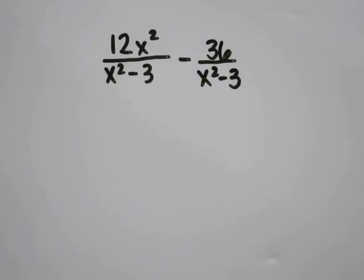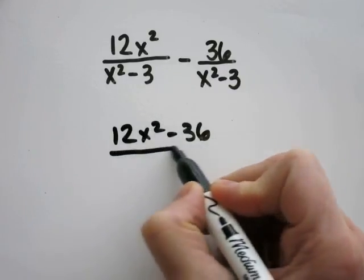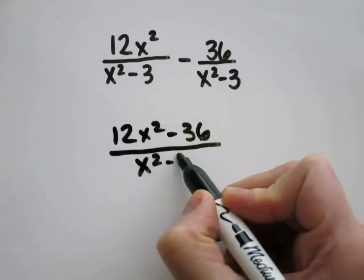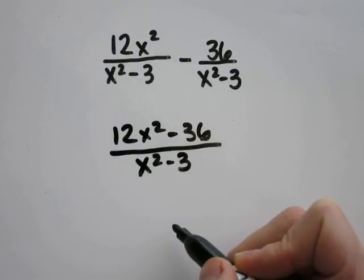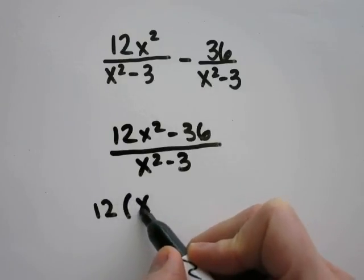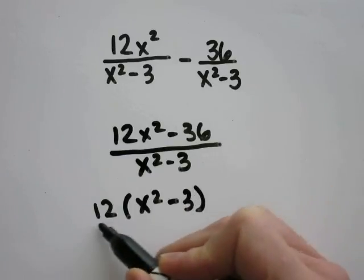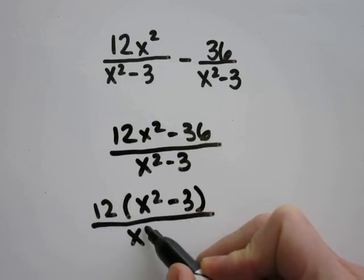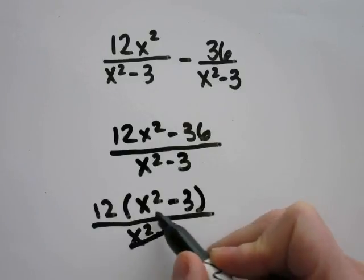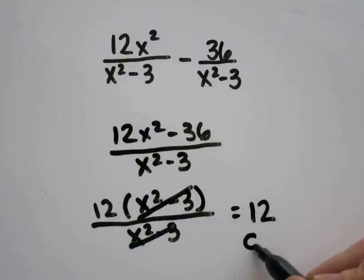Problem 18: 12x squared over x squared minus 3 minus 36 over x squared minus 3. The common denominator is already there, so you can combine the numerator. You'd have 12x squared minus 36 over x squared minus 3. 36 and 12 are both multiples of 12, so you can factor a 12 out of the numerator. That leaves x squared minus 3 over x squared minus 3, which cancels out, and you're left with 12, which is the same as letter C.